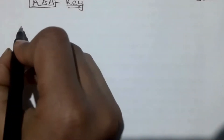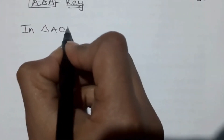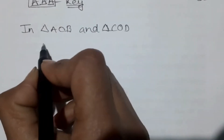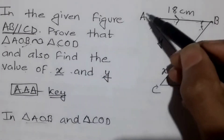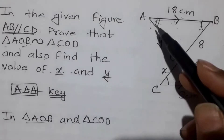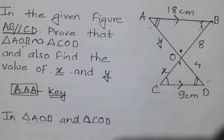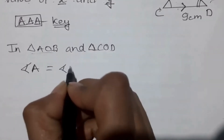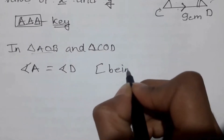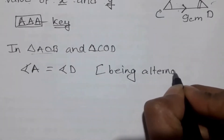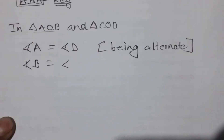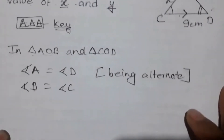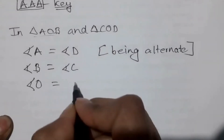The second one: we set up the triangle. This is triangle AOB and triangle COD. So angle A is equal to angle D. This is the reason. Similarly, angle B is equal to angle C. In the last step, we can see angle O equals angle O.